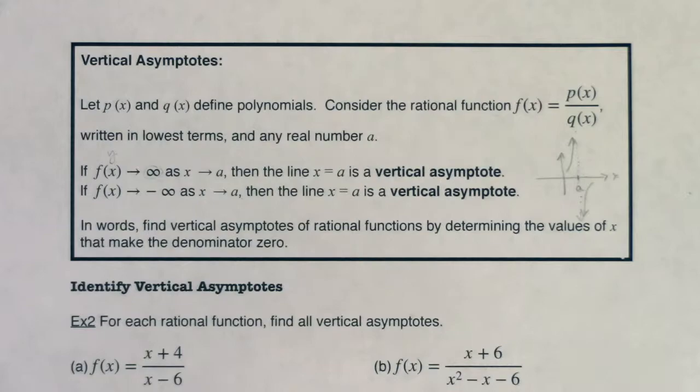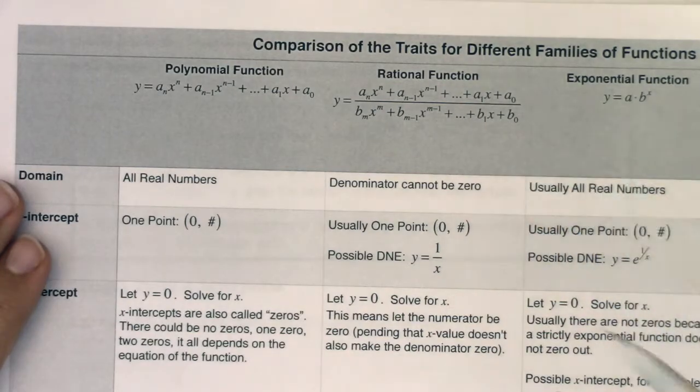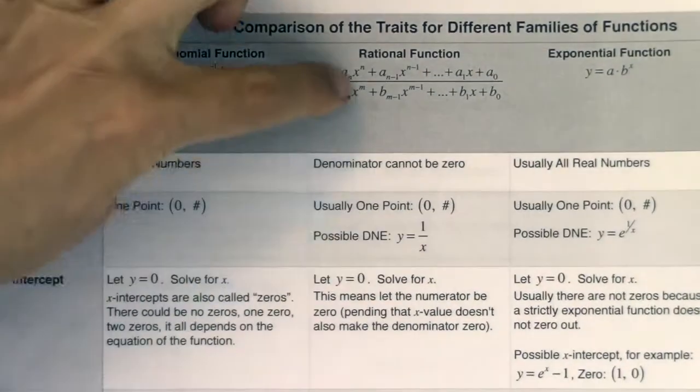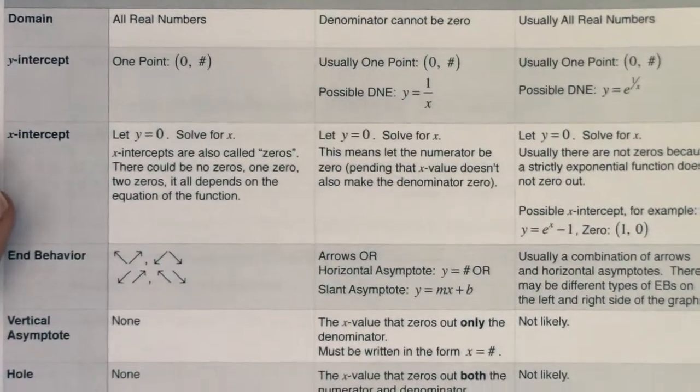Now, if I reference back to that trait table I gave you, if we're in the column that says rational functions, and I can't quite get this all on the same view screen, but I'm going to scooch my paper down to where it says vertical asymptotes.